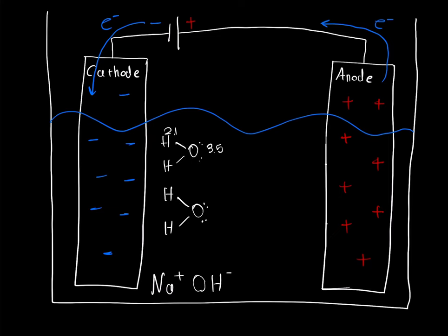We denote this as partial charge. Since the electrons are a little bit closer to oxygen than the hydrogens, the oxygen is going to have a partial negative charge, and both hydrogens are going to have partial positive charges. Now, as we talked about, opposite charges attract, and you can see that the hydrogens are going to be turned toward the cathode, which has negative charges.